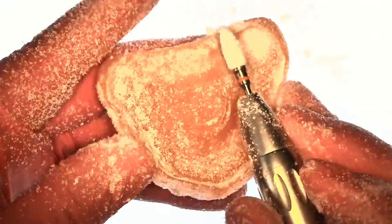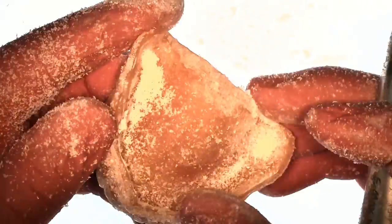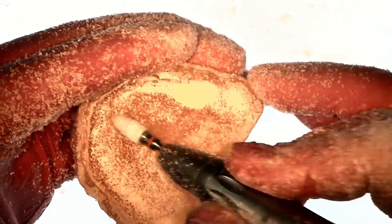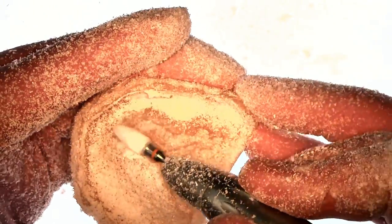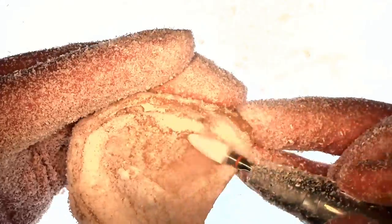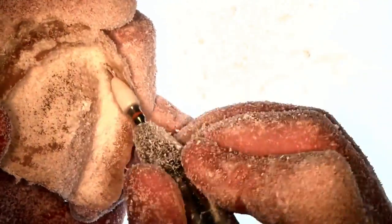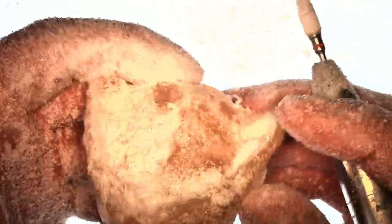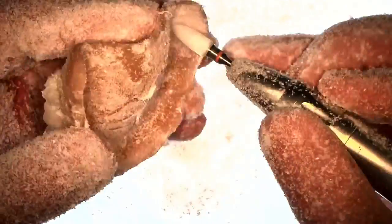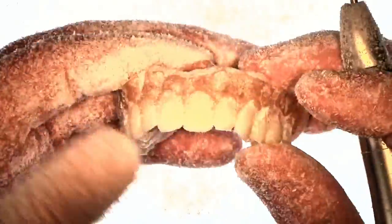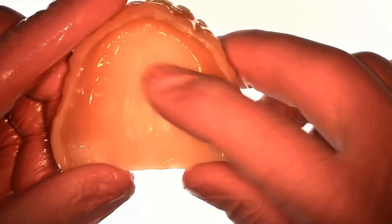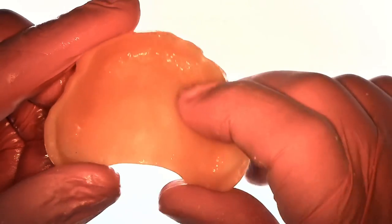The next thing that I do with the same burr is I'm going to relieve the surface of the intaglio of the denture. This is in this instance a permanent soft reline here for a printed Flexera denture. If you were doing an immediate denture oftentimes you do not need to reline the intaglio surface because you're already going to get shrinkage of the soft tissues so you already have that space.